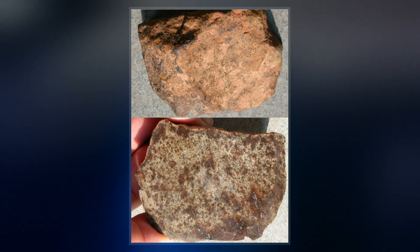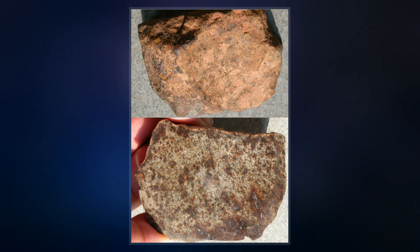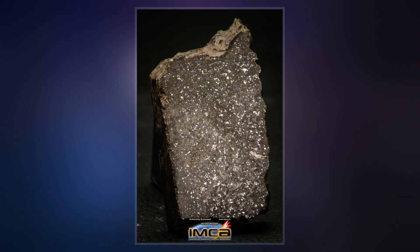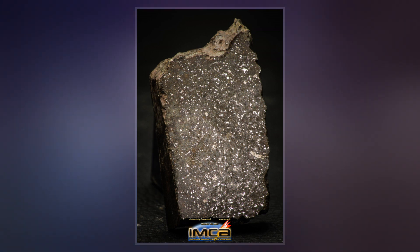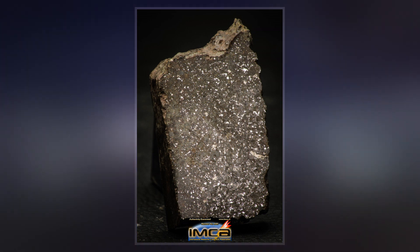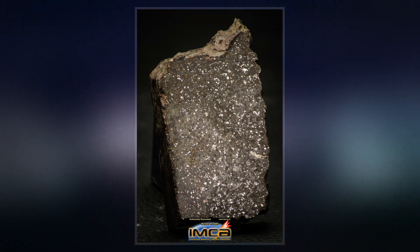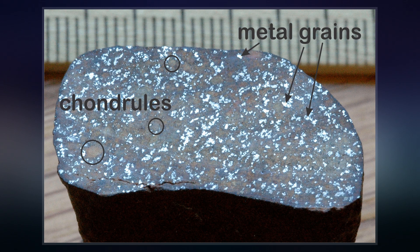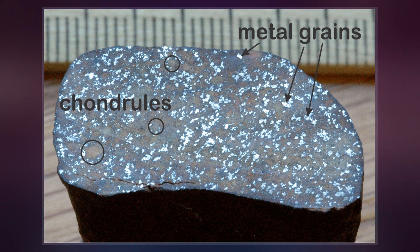The H-chondrites have very similar trace element abundances and oxygen isotope ratios to the IIE iron meteorites, making it likely that they both originate from the same parent body. Their high iron abundance is about 25–31% by weight.